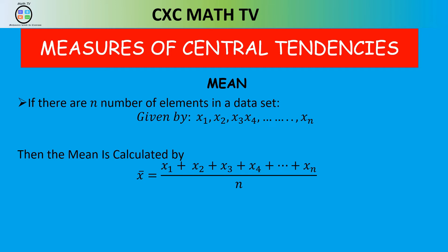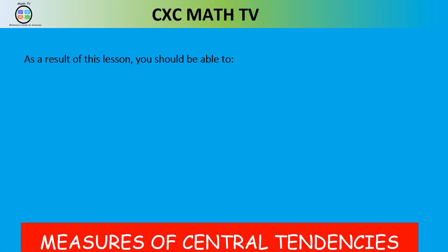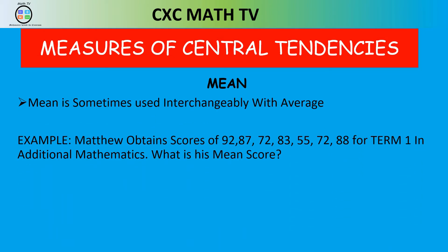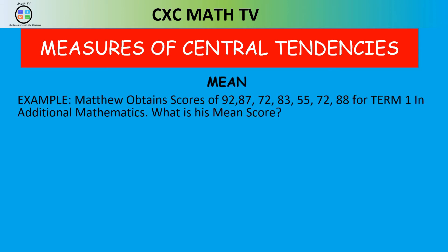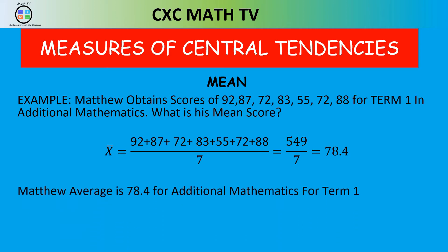Let's say Matthew obtains scores of 92, 87, 72, 83, 55, 72, and 88 for Term 1 in Additional Math. What is his mean score? Note that mean and average are used interchangeably. To find Matthew's mean, we add up all his scores and divide by 7. That gives 549 divided by 7, which is 78.4 — Matthew's add math average for Term 1.